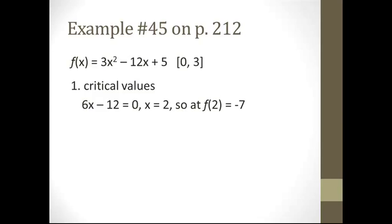We take x equals 2 and plug it back into the original equation: 3 times 2 squared is 3 times 4, which is 12; minus 12 times 2 is minus 24; so 12 minus 24 is minus 12; plus 5 gives minus 7. So when x equals 2, y equals minus 7 — that is the local minimum on that interval. Next, plug in the endpoint values. For x equals 0: the x² and x terms disappear, leaving y equals 5. For x equals 3: 3 times 9 is 27, minus 12 times 3 is minus 36, so 27 minus 36 is minus 9... arriving at approximately minus 4.